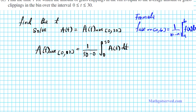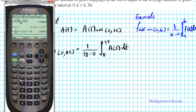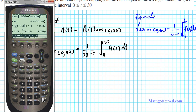We already have f(x) defined in the calculator, so we compute (1/30) times the integral of f(x) from 0 to 30. Entering this gives the approximate value of 2.753 to two decimal places. So the average value of this function is approximately 2.753.